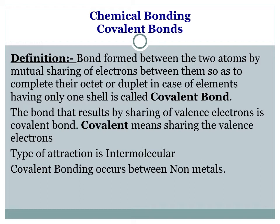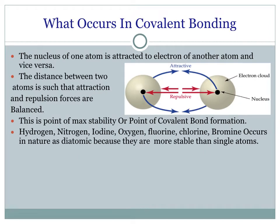The type of attraction between the atoms is the intermolecular attraction. Generally, covalent bonding occurs between nonmetals. Now let us study what occurs in covalent bonding — let us see the figure. There are two atoms shown: atom A and atom B. The nucleus of atom A is attracted to the electron of atom B.